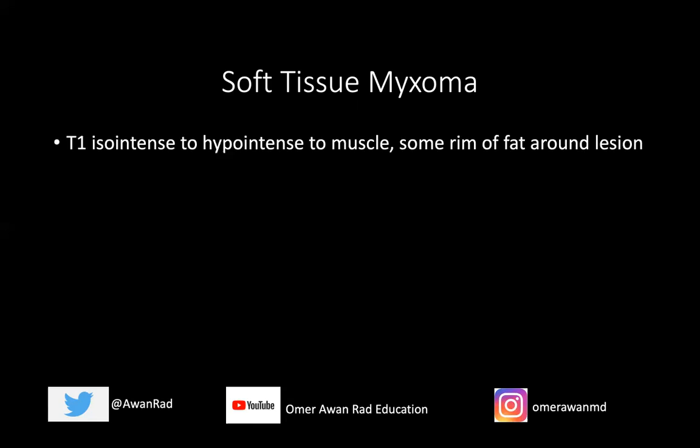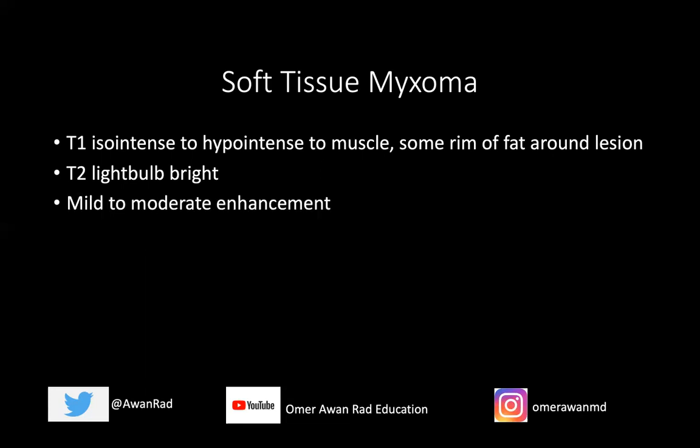On MRI, intramuscular myxoma is typically T1 iso-intense to hypo-intense to muscle. You may see a small rim of fat around the superior or inferior border of the lesion, as we saw in our case. They're very bright on T2 because of their myxoid content. Post-contrast enhancement is very variable — some show mild to moderate enhancement, others show almost none.